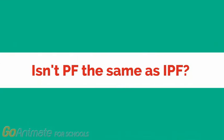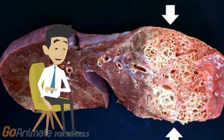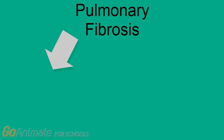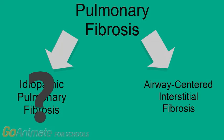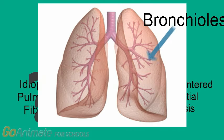Let's start off by looking at the first question: isn't pulmonary fibrosis the same as idiopathic pulmonary fibrosis? Pulmonary fibrosis is a general term referring to a disease involving the scarring of the lungs. This scarring of the tissue causes it to become thick and interfere with a person's breathing. In the picture, the scarring is highlighted by the white arrows. There are many different types of pulmonary fibrosis. The main difference is that idiopathic pulmonary fibrosis is a subset of pulmonary fibrosis where the cause of the disease is unknown. Another example is airway centered interstitial fibrosis, which is characterized as having fibrosis around the bronchioles — small airway passages in the lungs.